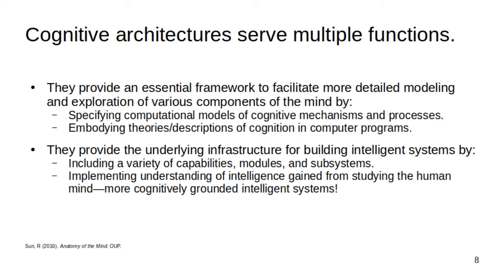Cognitive architectures may also serve AI in that they provide some kind of infrastructure for building intelligent systems. This infrastructure has the distinction of including a variety of capabilities that are grounded in cognition.